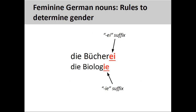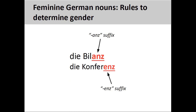Nouns ending in –ei and –ie, such as 'Bücherei,' meaning library, and 'Biologie,' meaning biology, are always feminine. Nouns ending in –anz and –enz, such as 'Bilanz,' meaning balance (a financial term), and 'Konferenz,' meaning conference, are always feminine.